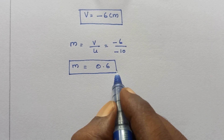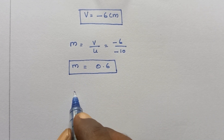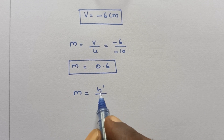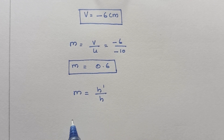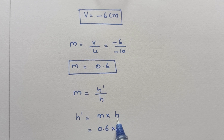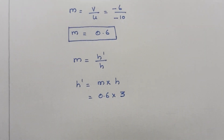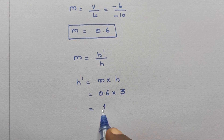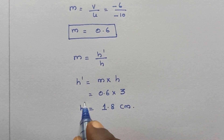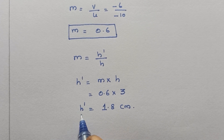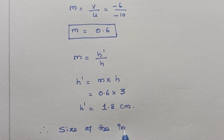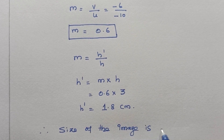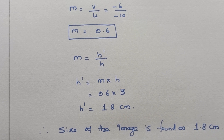Now we know the value of M. By substituting M in the equation m equals h dash by h, we can find h dash. H dash equals M into H, which is 0.6 multiplied by 3, giving us 1.8 centimeters. Therefore, H dash equals 1.8 centimeters, and this is the size of the image. So this is the answer for the question.